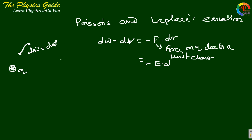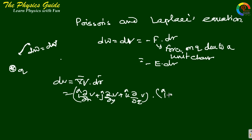So dv equals grad V dot dr, because grad V equals I del/del x V plus j del/del y V plus k del/del z V, dot dr which is I dx plus j dy plus k dz. So doing this we can get dv.